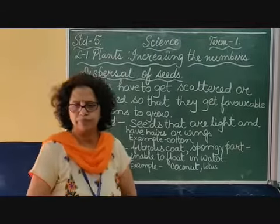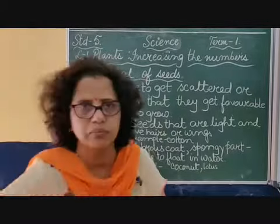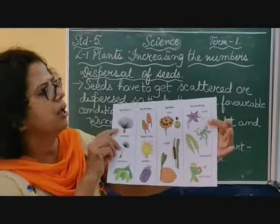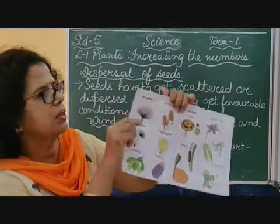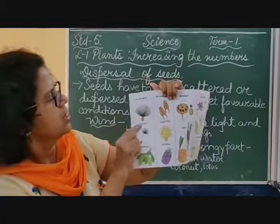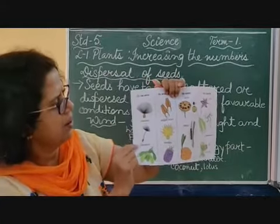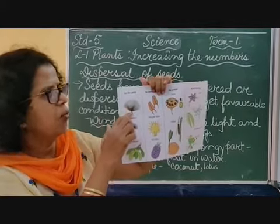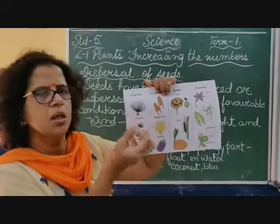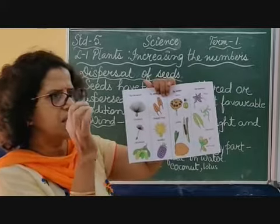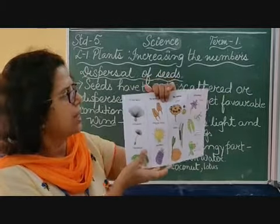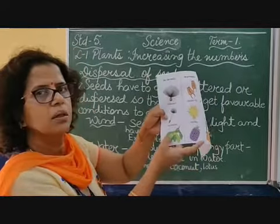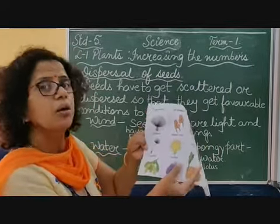I am showing you a picture now. Children, observe carefully — seeds dispersed by wind. You can see how they are hairy. So these seeds have to be hairy or have wings. Have you seen cotton? It is very light, and that is why it can be dispersed by the wind.